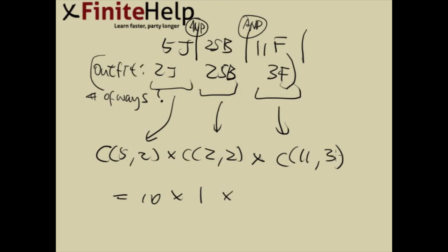11 choose 3, that's going to be, let's see, 11, 10, 9 over 3, 2, 1. That's 5, that's 3. 15 times 11, that's going to be 165. I hope I didn't do it too fast and did it wrong. The answer should come out to 1,650.